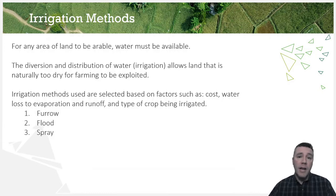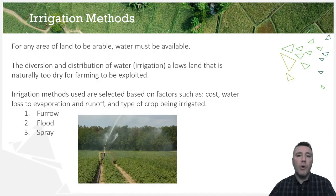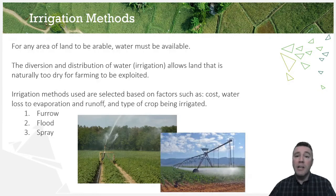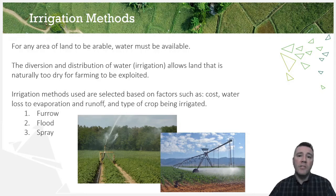Spray irrigation results in significantly less water loss due to evaporation and runoff, but is much more expensive to build and maintain and requires energy to pump large volumes of water over the crops. Onion and sunflower crops are regularly irrigated in this fashion, and corn, cotton, and wheat are also irrigated this way, assuming the cost of implementing the system can be afforded.